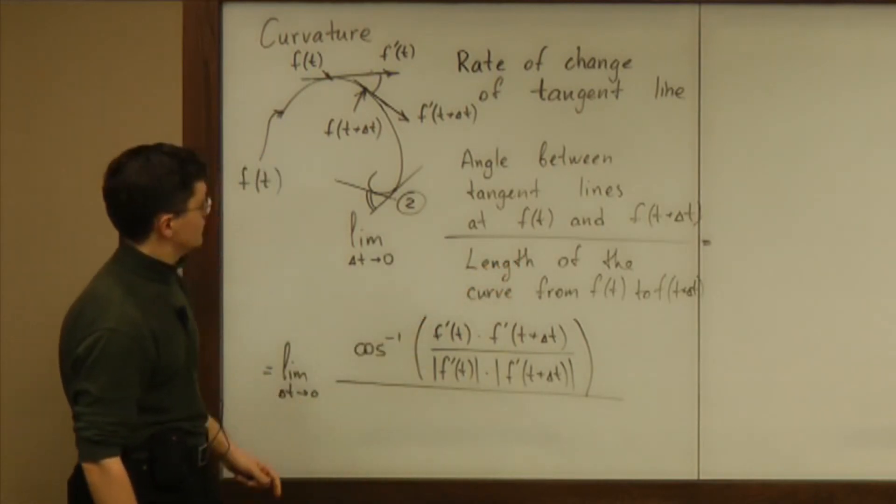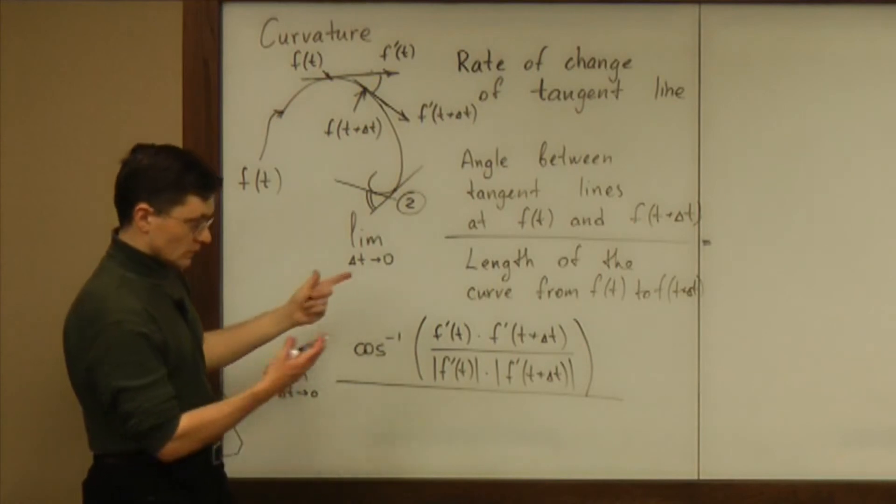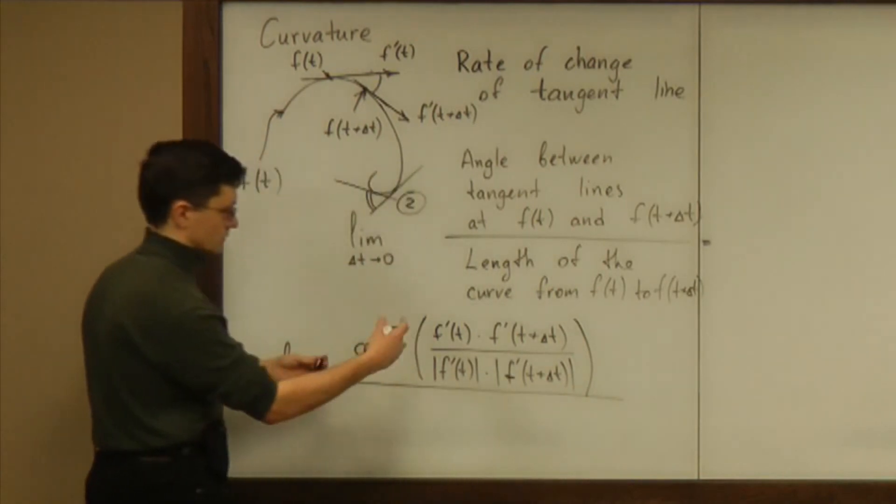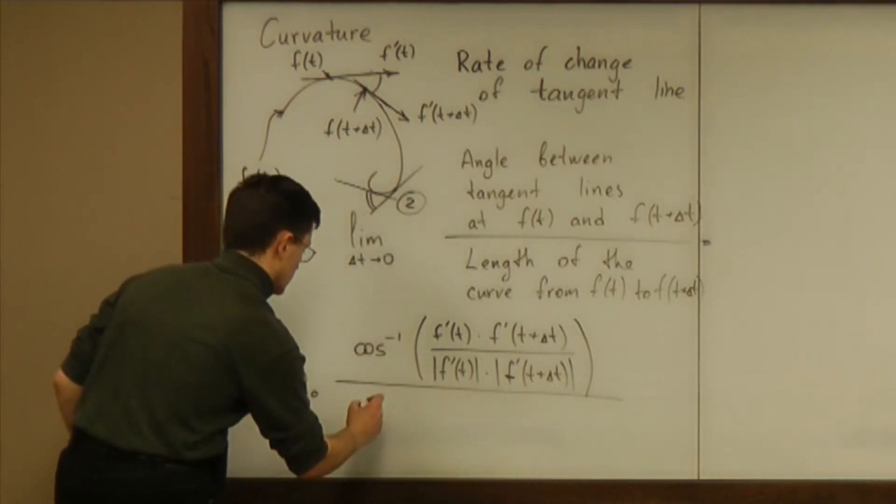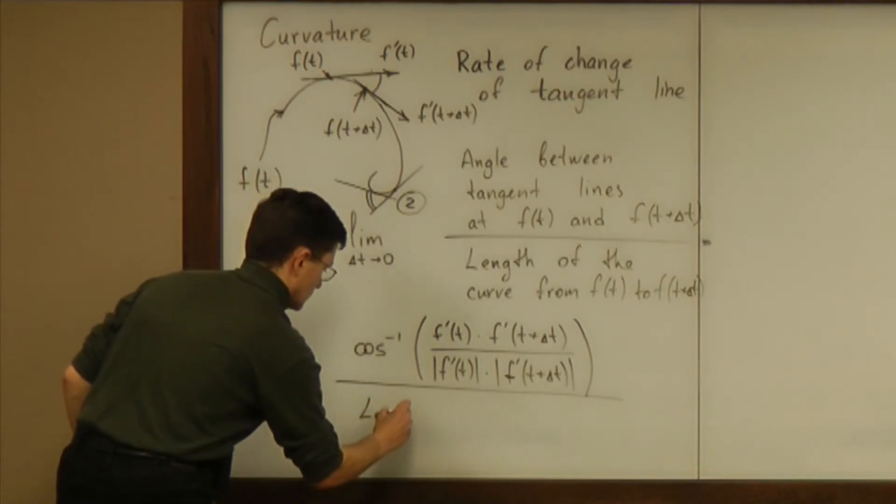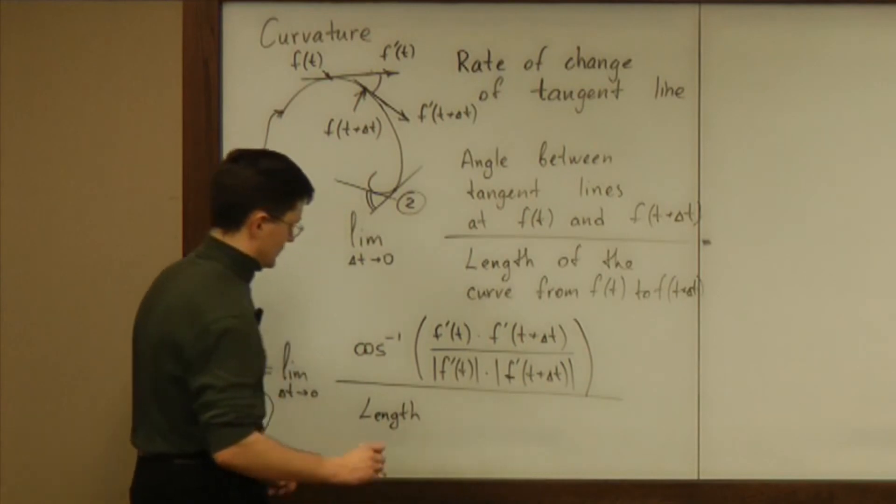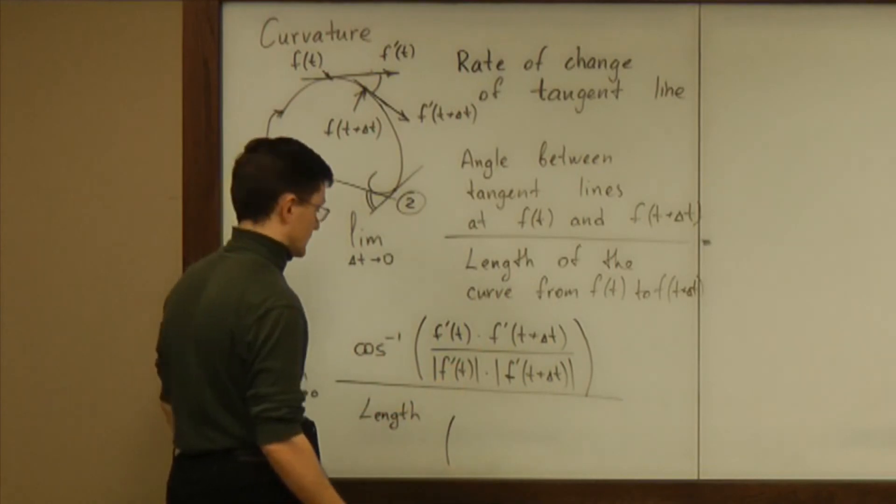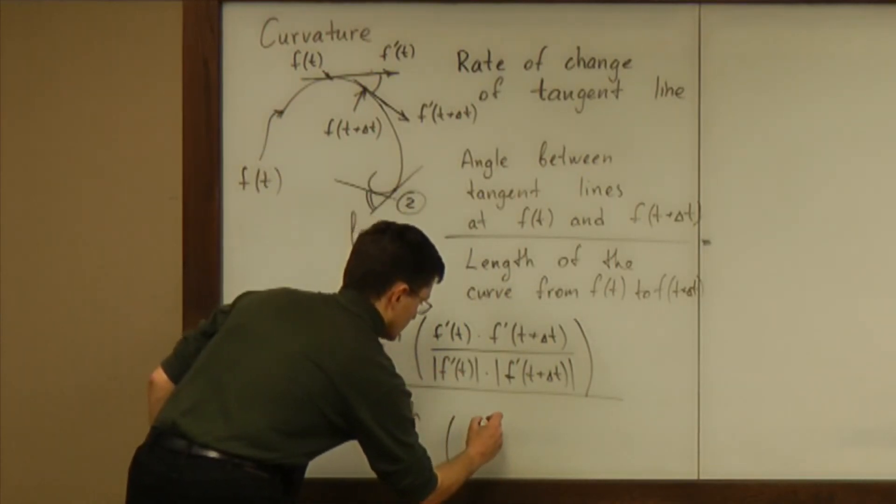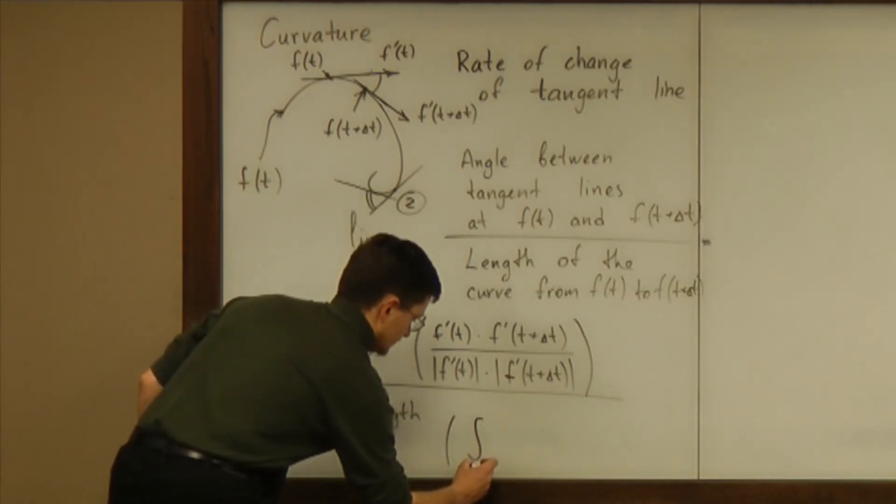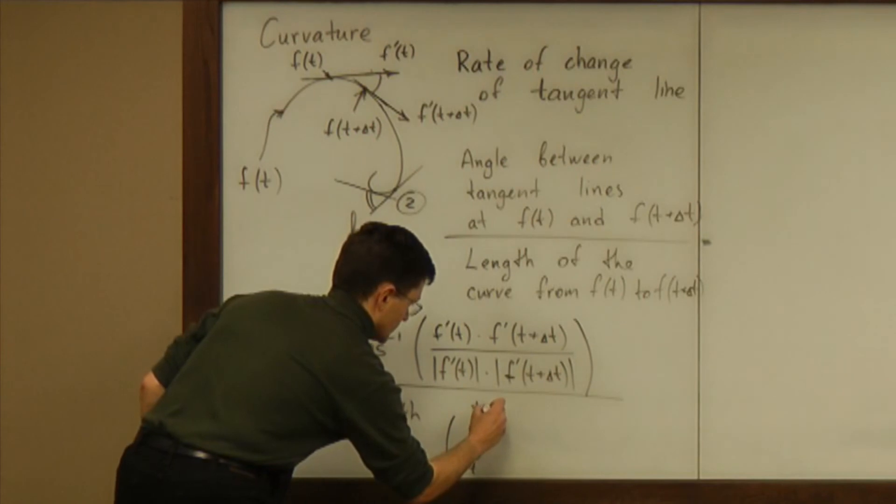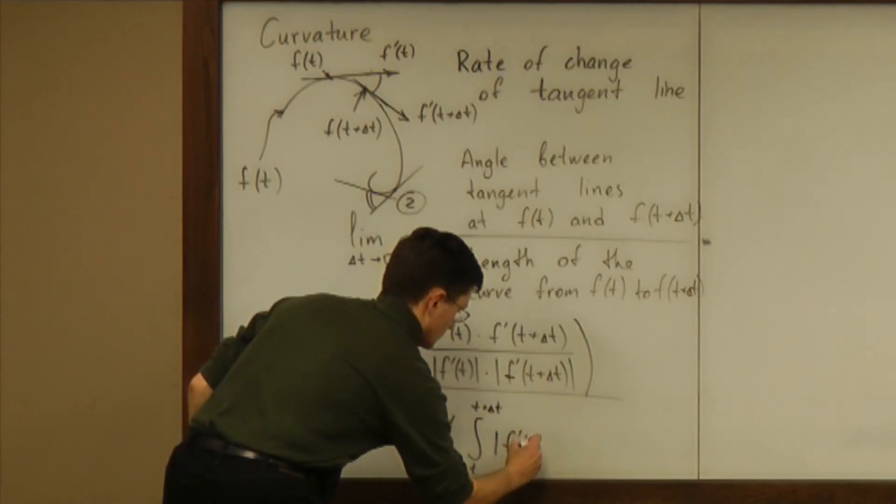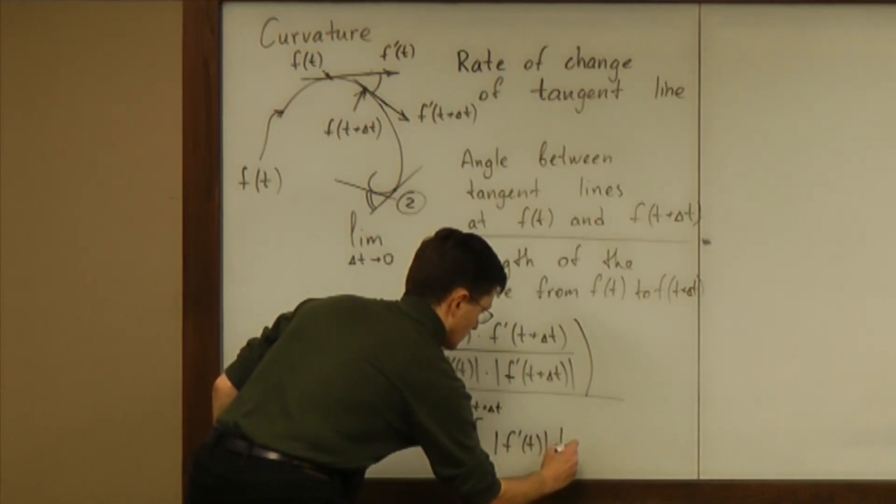Now, what's the length of the curve from this point to that point? Well, that's not an easy expression if you want to turn it into an exact formula. So let me leave it for now as just length and remind you from calculus two that length can be computed as an integral from t to t plus delta t of the magnitude of the speed with respect to t.